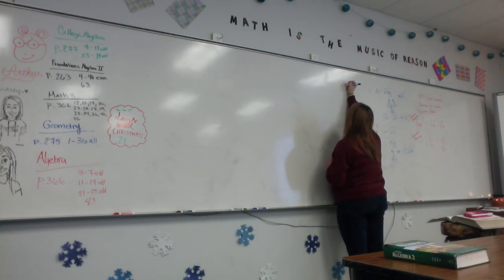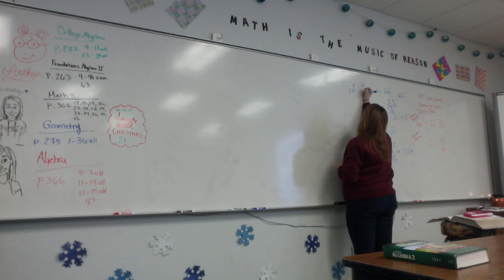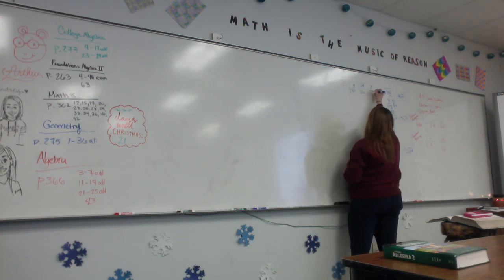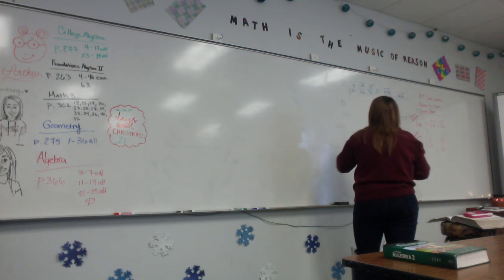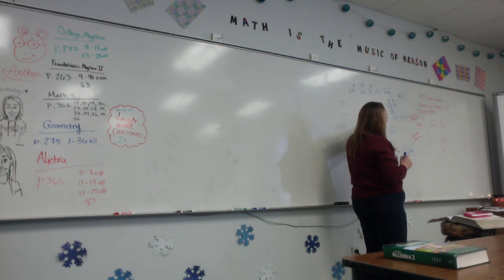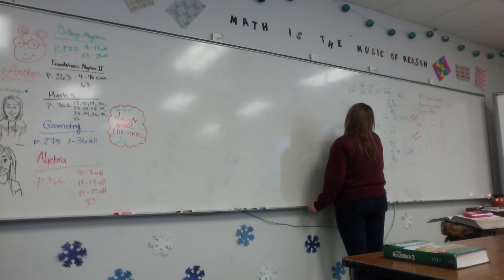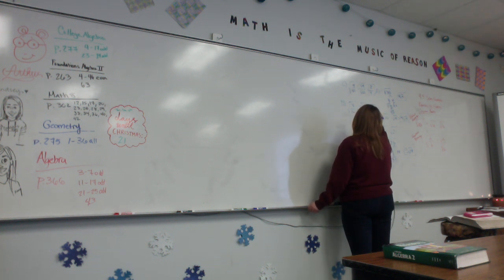For the square root of 4 over 81, separate it into the square root of 4 over the square root of 81. The square root of 4 is 2, and the square root of 81 is 9, so the answer is 2 over 9. For the square root of 7 over 16, that becomes radical 7 over radical 16. Since 7 has no perfect square root, you leave radical 7 on top. The square root of 16 is 4, giving radical 7 over 4.